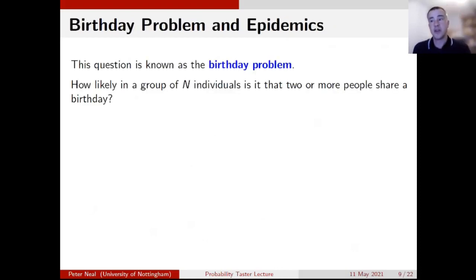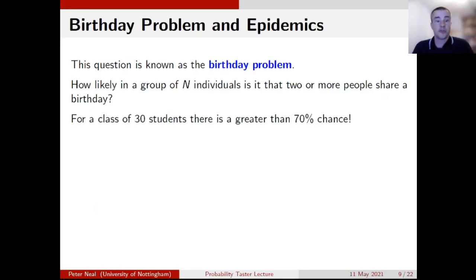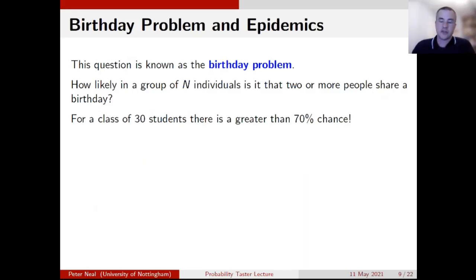This is known as the birthday problem, often phrased as: how likely is it that in a group of a certain size, two or more people share a birthday? Sticking with the number 30 — a lot of school classes are about 30 students — what's the chance that in a class of 30 students, at least two share a birthday? There's about a 70% chance of that happening, under the assumption that each day of the year is equally likely.